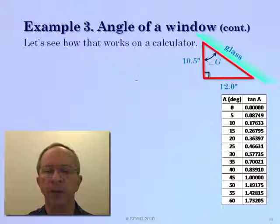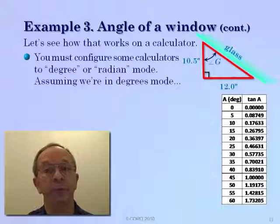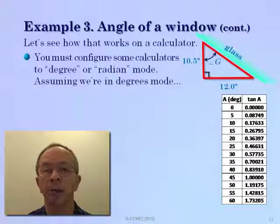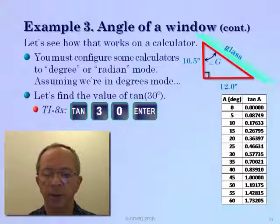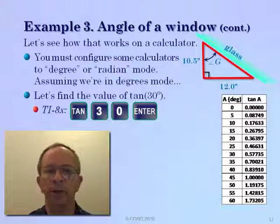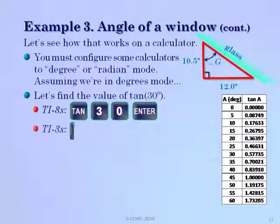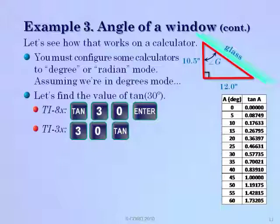Let's see how to do that on a calculator. Some calculators, especially the TI-80 series, need to be configured in degrees or radian mode. Assuming we're in degree mode, let's find the value of tangent of thirty. On the TI-80 series, press tangent, key in thirty, and press enter. On a TI-30 series, push the numbers in first and then press the tangent function. In either case, the tangent of thirty is point five seven seven three five.